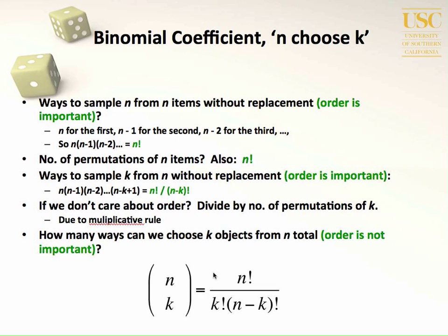We have to count equally likely outcomes and the total possible outcomes, then we can create this proportion and calculate the probability. That's essentially how the hypergeometric distribution is formed, and it's composed of the binomial coefficient.